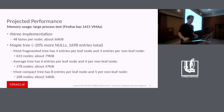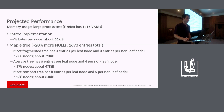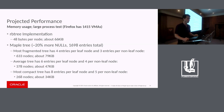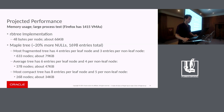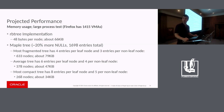Looking at the memory used: the rbtree uses 48 bytes, which is about 66 kilobytes for Firefox. This Firefox test is 1,415 VMAs. We're adding about 20% more entries in the maple tree for the nulls — that's just the way the maple tree works; if you have a gap that is empty, you need a null entry there. But this allows us to be between 20% worse for space and 50% better — on average, about 20% better. That's also a promising aspect of the tree.